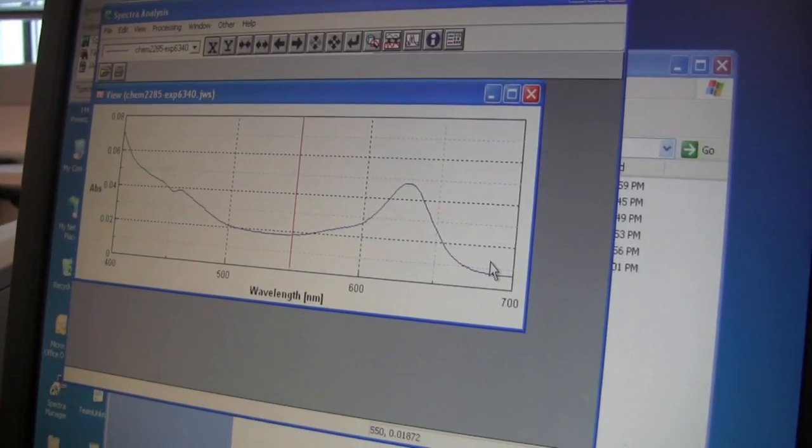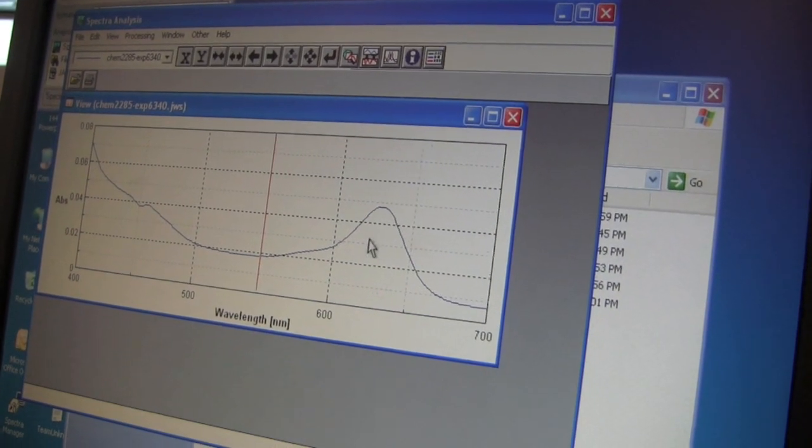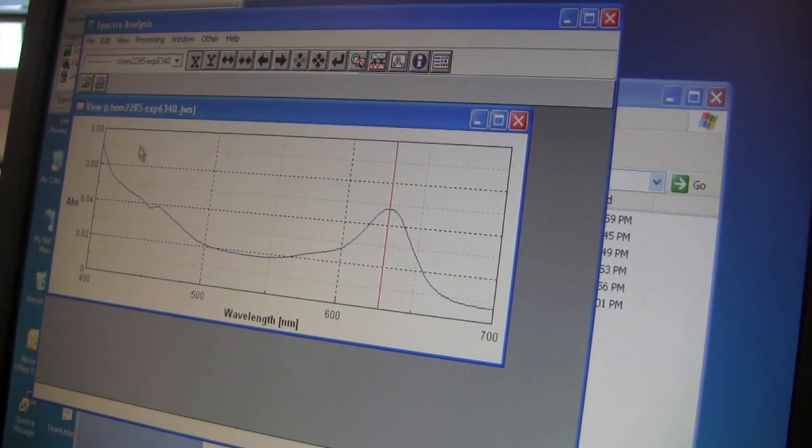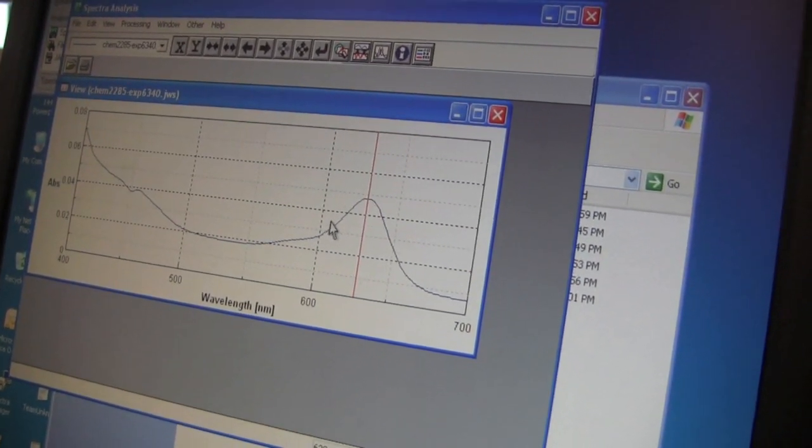When it's finished, you want to find the highest point on the graph. Since this graph was of food coloring, it will look different than the graph of yours. This one has two peaks, yours should only have one.